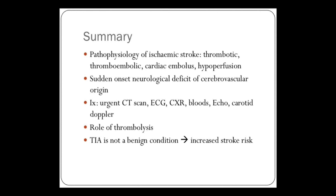To summarize: ischemic stroke is caused by thromboembolism — plaque rupture and an embolus, cardiac embolus for example from AF — or hypoperfusion causing global underperfusion of the brain. Clinically it presents as sudden onset neurological deficit. Investigate by resuscitating the patient and doing an urgent CT scan to rule out hemorrhage. If within three hours and no hemorrhage, the patient may be eligible for thrombolysis. Then do further investigations to look at the cause. And remember that TIA is not a benign condition — aggressively treat people with TIA to reduce their risk of stroke.